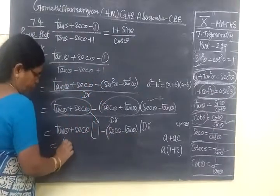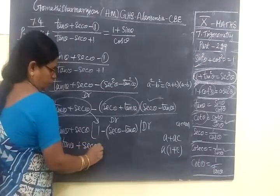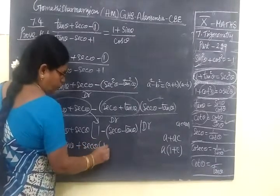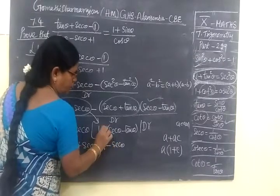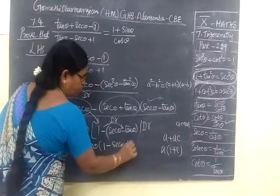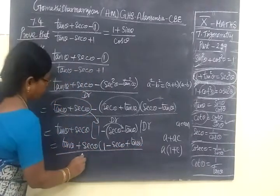Minus. So tan θ + sec θ bracket 1 minus. So minus sec θ. So minus into minus plus tan θ divided by. Now you write denominator.